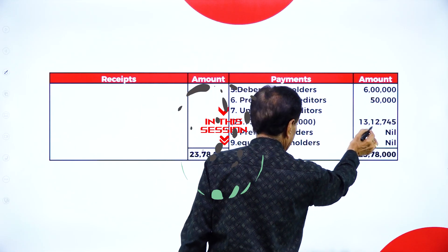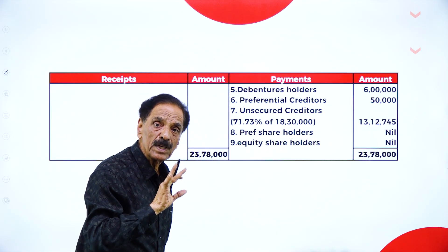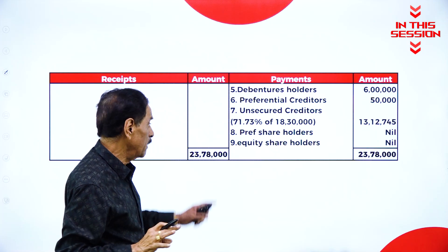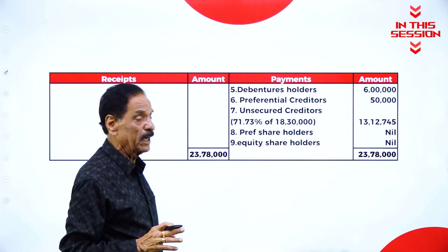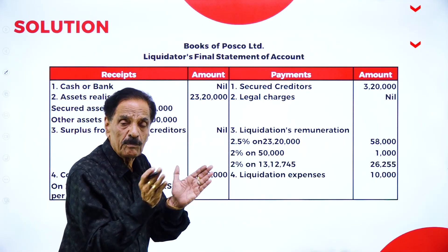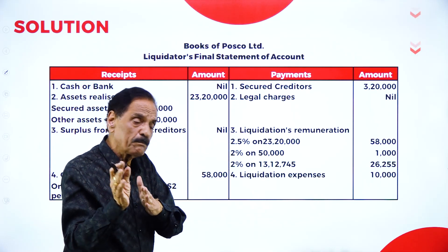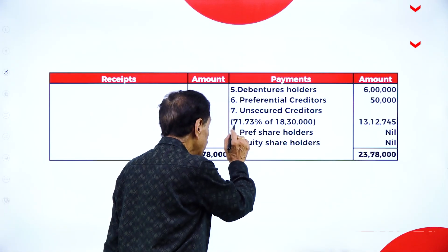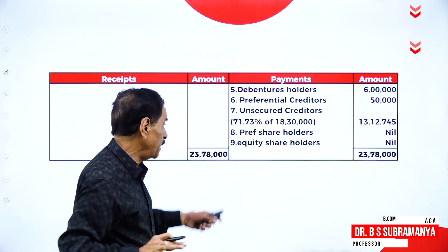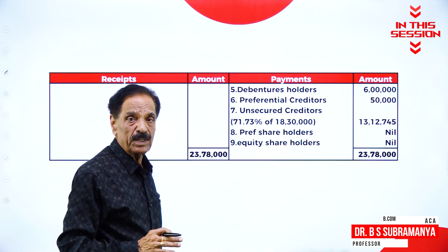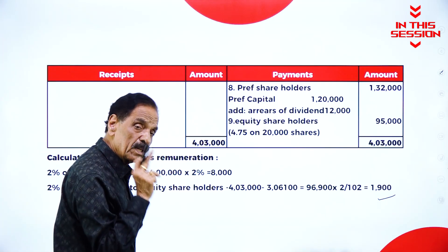Whatever the amount is payable, that is paid to unsecured creditors. No amount is available for preference shareholders or equity shareholders. You have got a balance of rupees 23 lakh 20,000. Now you make the payment even for unsecured creditors — there is no question of paying preference shareholders and equity shareholders because there is a shortage of money.